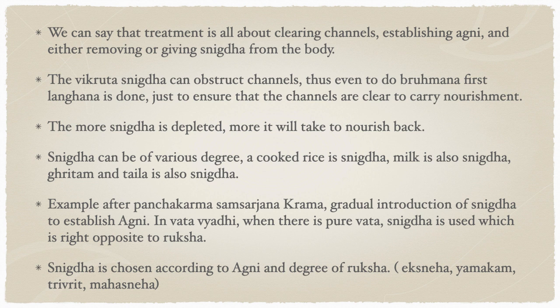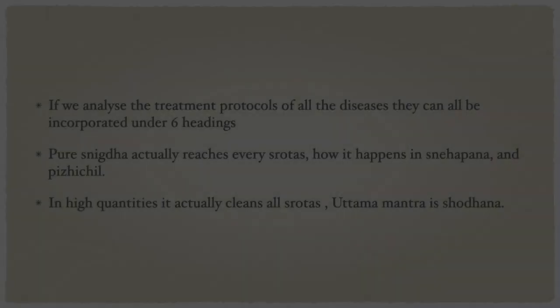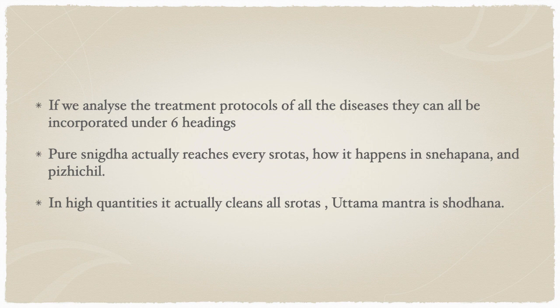If we have to introduce more snigtha to the system, it is chosen according to the agni and degree of ruksha. In Ayurveda there are four types of snigtha: ghritam, thailam, masa, and majja. These can be given individually or in combination — eka sneha, yamaka (two), tri-sneha (three), or mahasneha (all four). If we analyze treatment protocols for all diseases, they can be incorporated under six headings, as beautifully explained by Charaka.